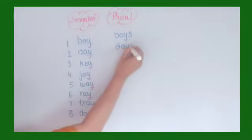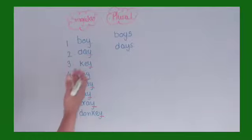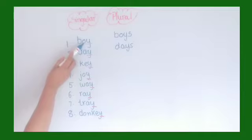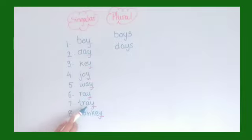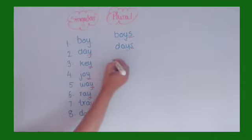Day becomes days. How do you remember which words just add S and which take IES? It's simple. If the letter before Y is a vowel — O, A, E — then you simply add S to the word to change from one to many. These letters before Y are vowels, so we just add S.